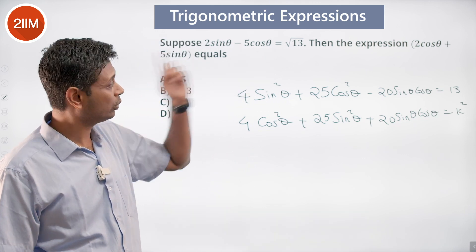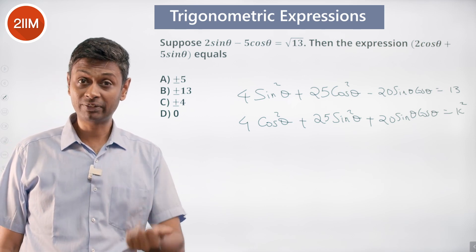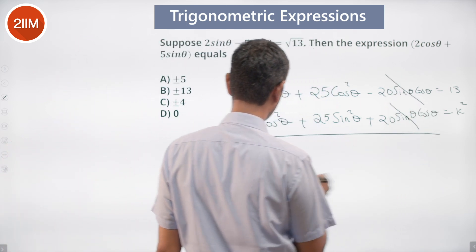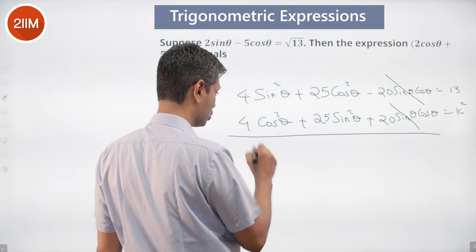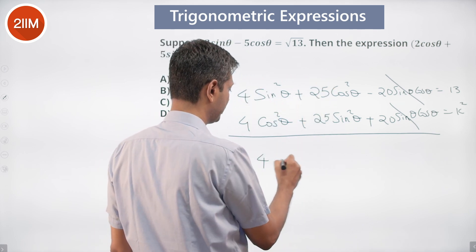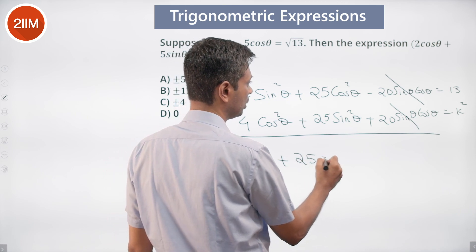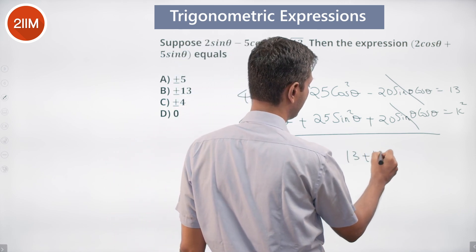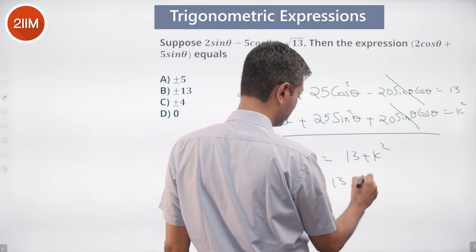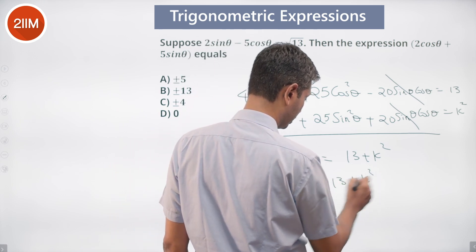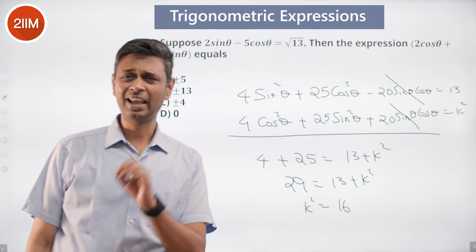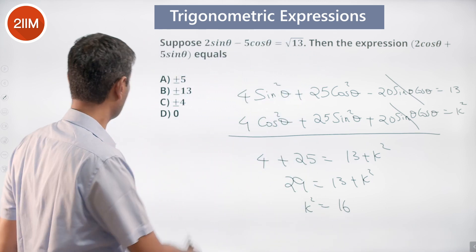The beauty is, this is 2 and 5, so squaring gives 4 and 25. Nicely, if I add both of these, the cross terms disappear. I have 4sin²θ + 4cos²θ = 4, and 25cos²θ + 25sin²θ = 25, giving 29 = 13 + k².